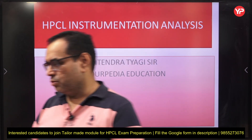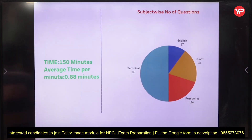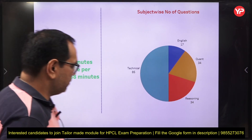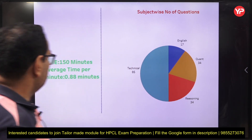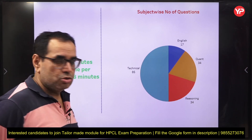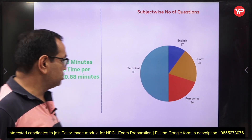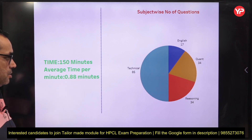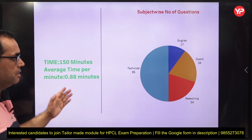In this video I'm going to discuss the pattern of the exam based on previously conducted papers. First, the general structure: the duration of the exam is 150 minutes — two and a half hours. The total number of questions is 170, so the average time per question is about 0.88 minutes, or roughly 50 seconds per question.